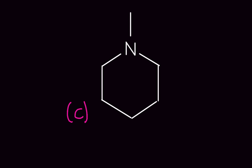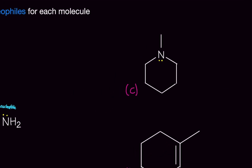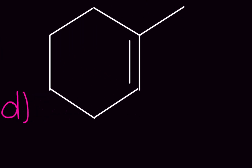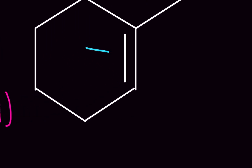For molecule C, even though we don't see any electrons, we draw them in: nitrogen gets one lone pair of two electrons, making nitrogen the nucleophile. For molecule D, we see a double bond and no electronegative atoms — there are no inductive effects since it's all carbons — so the double bond is the nucleophile.